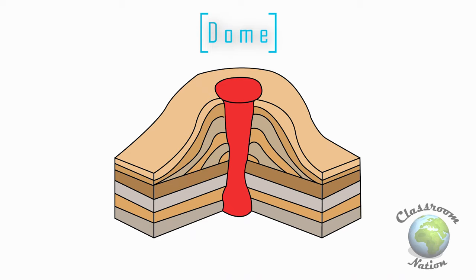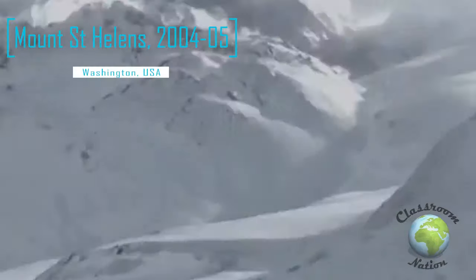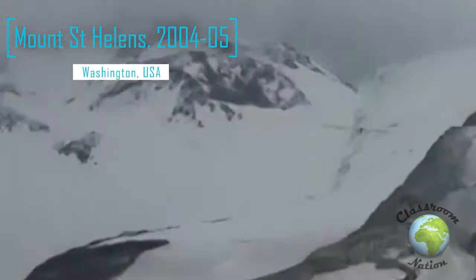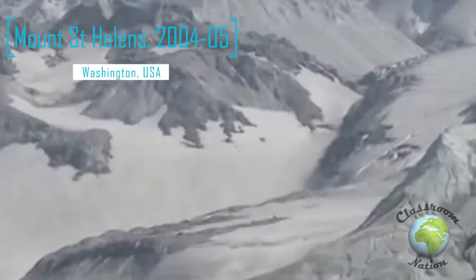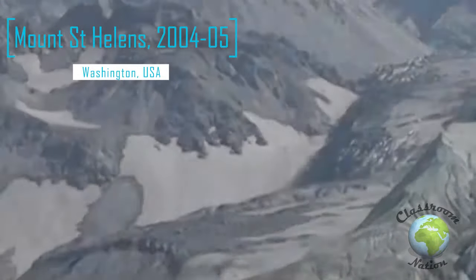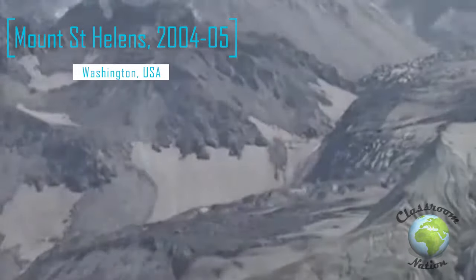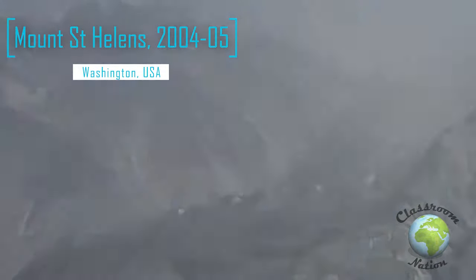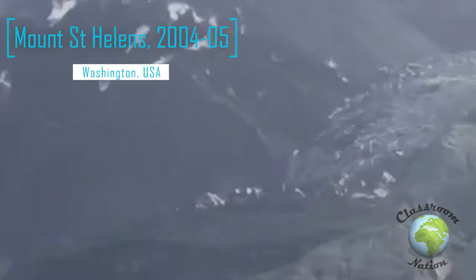The last type of volcano we shall look at are lava domes. Lava domes are significantly smaller in stature and are formed when lava is too viscous to flow far. As the lava dome slowly grows, the outer surface cools and hardens as the lava continues to pile up within. Eventually the pressure inside shatters the outer surface, causing loose fragments to spill down the side. Lava domes can be found on the side of larger composite volcanoes.